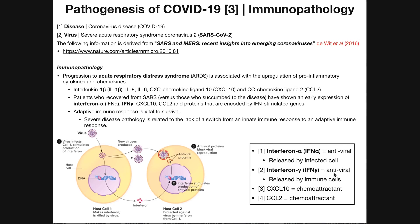We also have interferon gamma, an antiviral protein released by immune cells rather than the infected cell itself. Interferons alpha and beta actually trigger other immune cells, like macrophages, to start releasing interferon gamma. Interferon gamma then triggers aspects of the immune system to destroy cells that are infected. CXCL10 and CCL2, both chemokines, are released to guide white blood cells to the infected area to destroy the infected cell — without these, white blood cells would have no idea where to go.